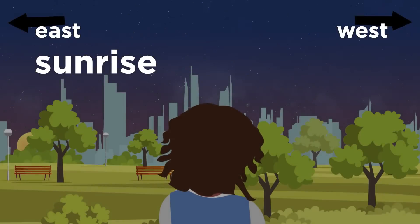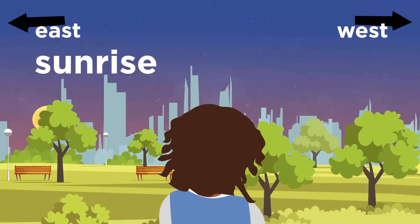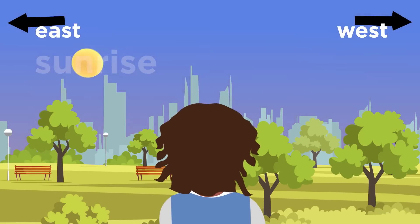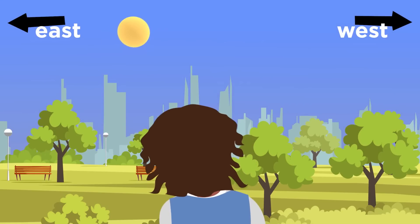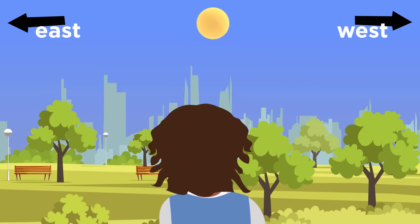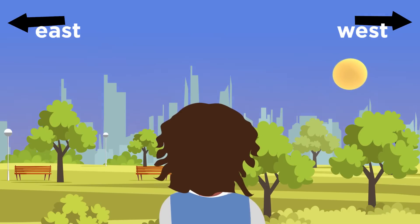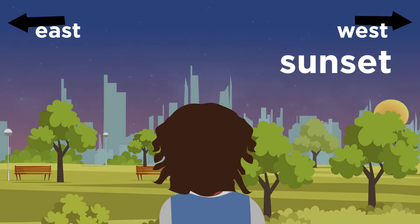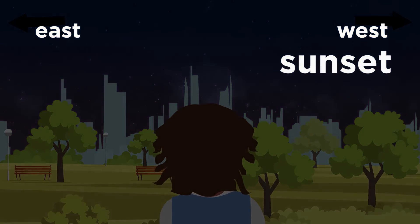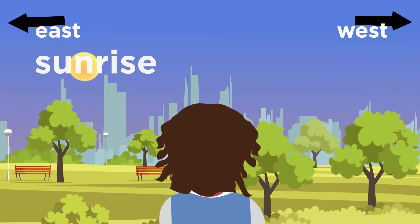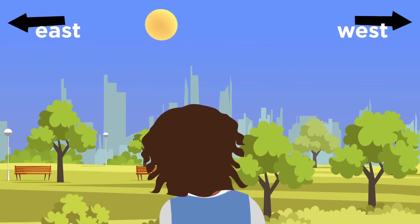The position of the Sun follows a pattern. Every morning the Sun rises in the east. It then moves from east to west until it reaches its highest point at midday — that is when Rita eats lunch. The Sun's position keeps moving in the same direction. Finally, every evening the Sun sets in the west. This pattern repeats day after day.